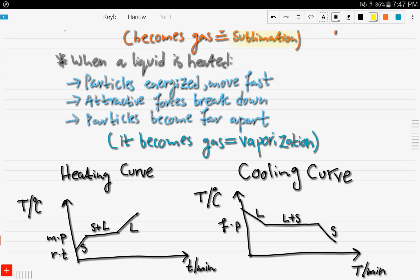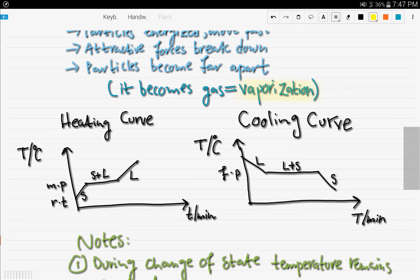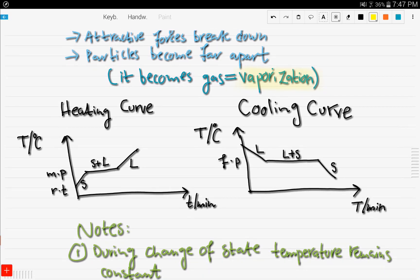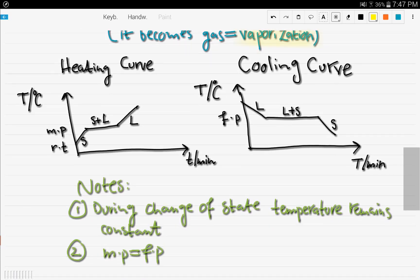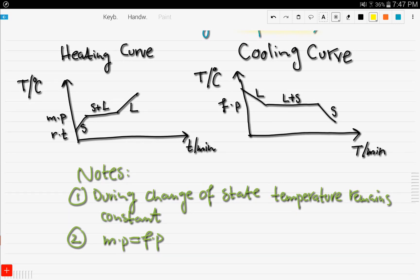When a liquid is heated, the particles get energized and move fast, all the attractive forces break down, and the particles become far apart, forming a gas. This process is called vaporization or evaporation. Changing from a liquid to a gas is known as vaporization.